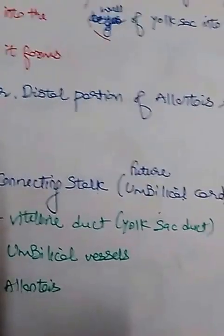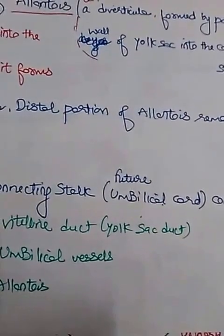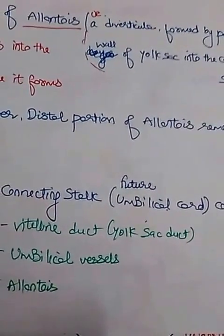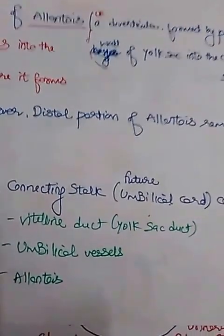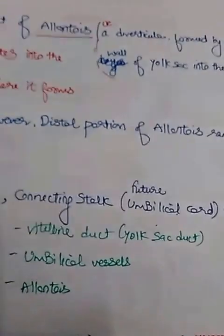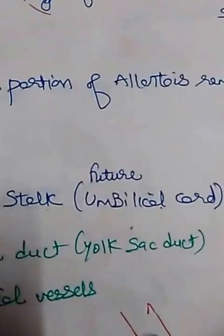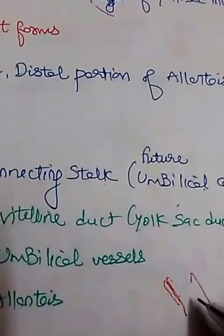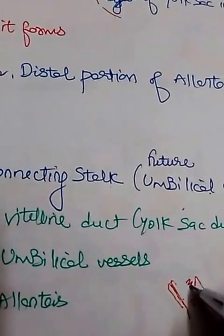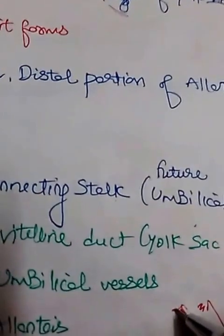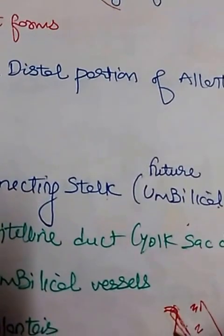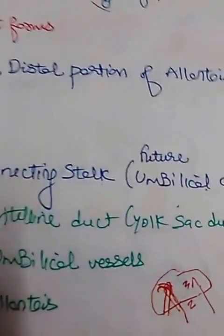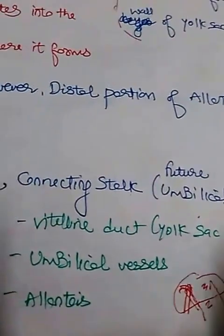To summarize, the future umbilical cord contains the vitelline duct, umbilical vessels, and allantois. The connecting stalk contains the umbilical vessels and allantois directly, while the vitelline duct comes into contact with this region during folding. So the umbilical cord is said to contain these three components.